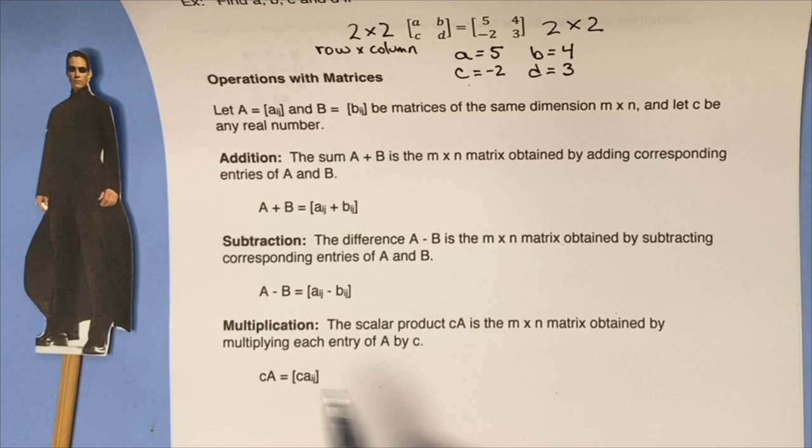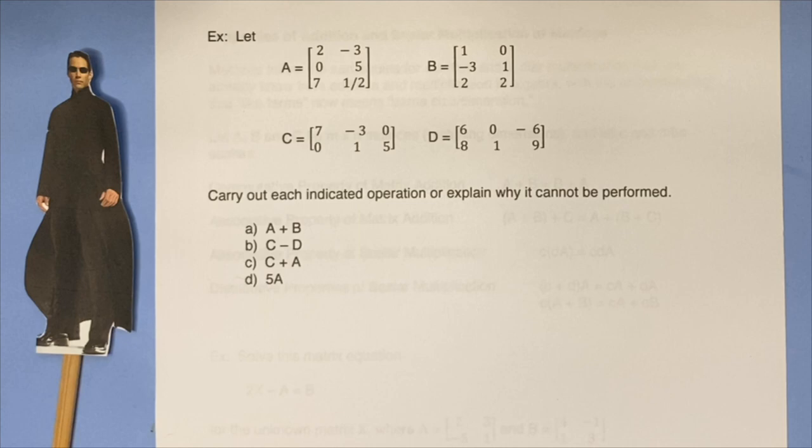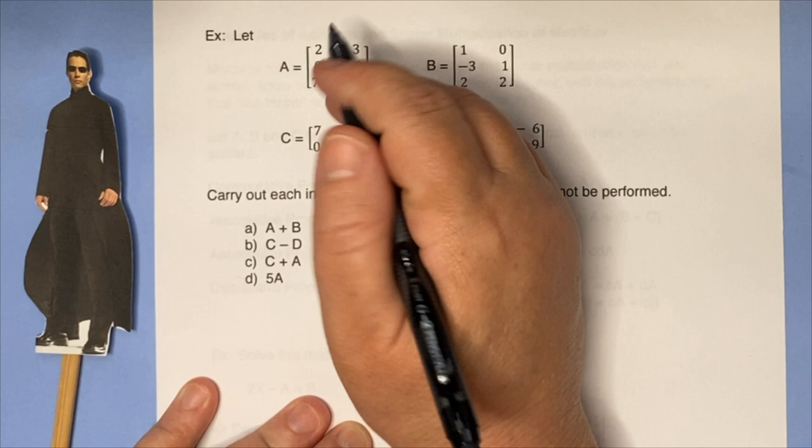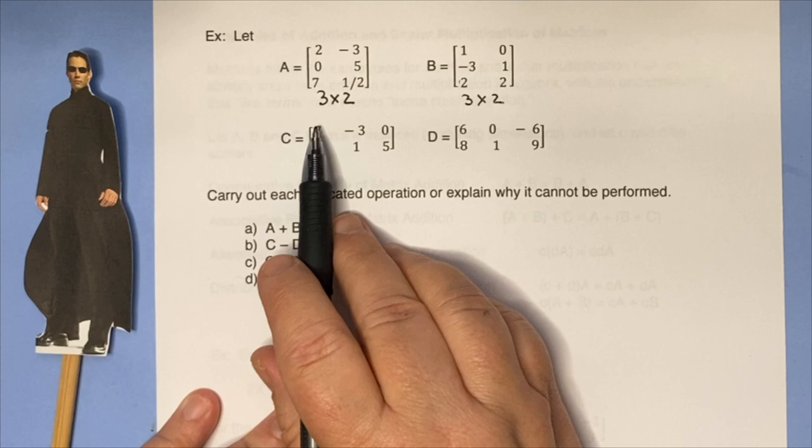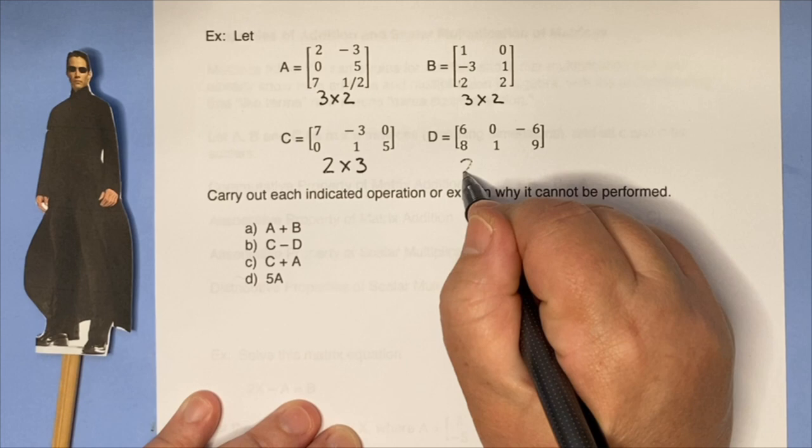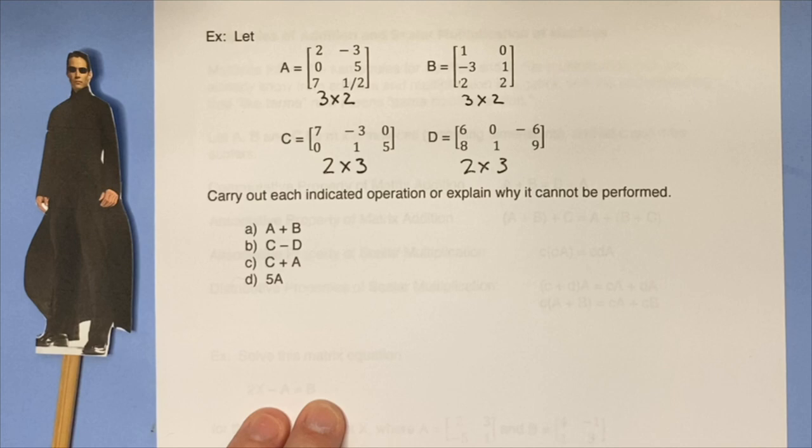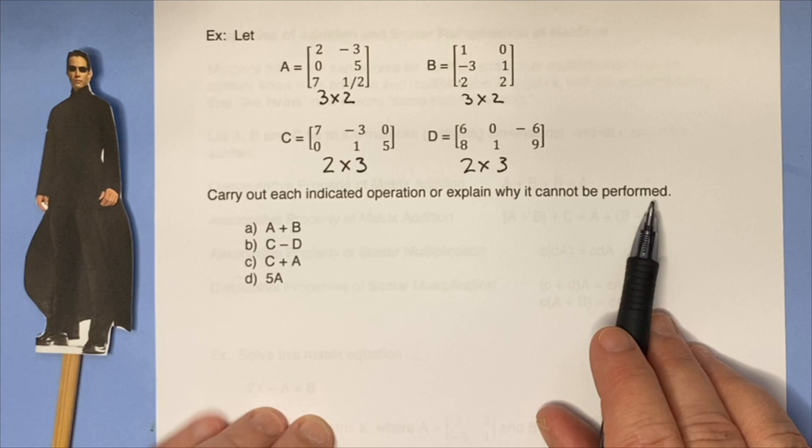Let's take a look at what that means. We've got A, which is a 3 by 2 matrix; B, which is a 3 by 2 matrix; C is a 2 by 3, kind of the opposite size; and D is 2 by 3 again. So let's see what we can do. We'll ask, what is A + B? And we're supposed to carry out the operation or explain why it cannot be performed.